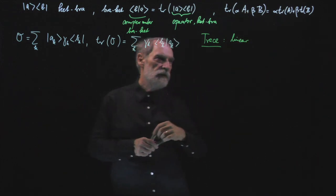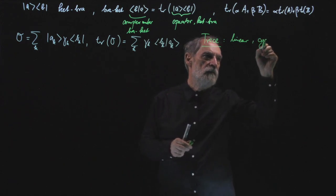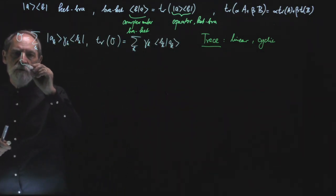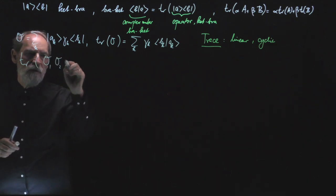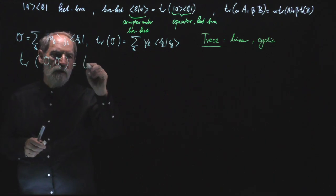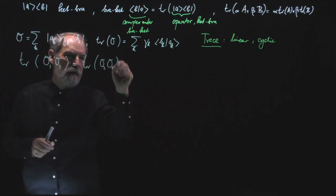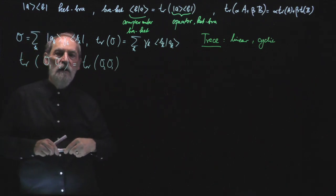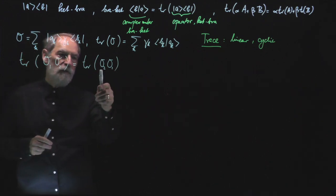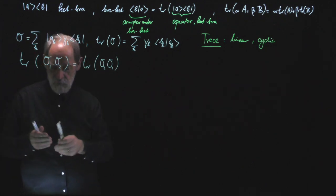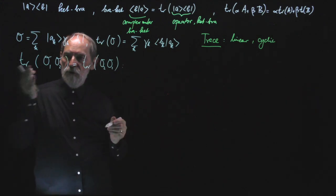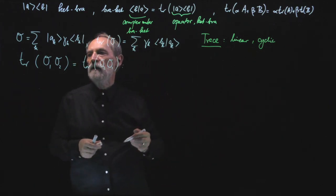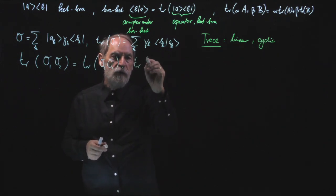There is another property of the trace, namely that it is cyclic. That means if I have the trace of two operators O1 and O2, it doesn't matter in which order they are multiplied — the trace of O1·O2 equals the trace of O2·O1. Although these products can be very different operators, they have the same trace. All we need to check is that this holds for the prototype operators, because then linearity does the rest.